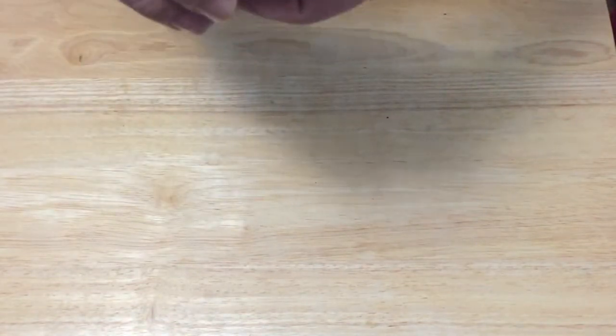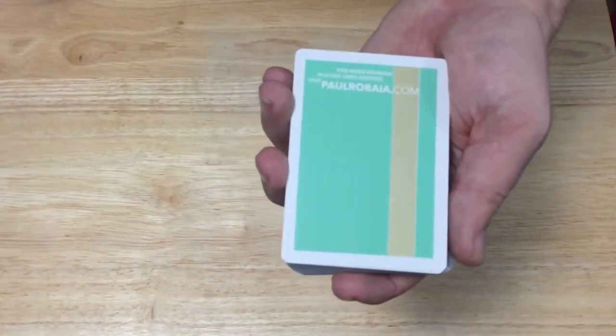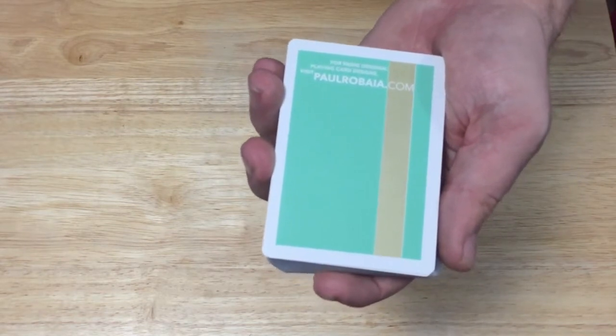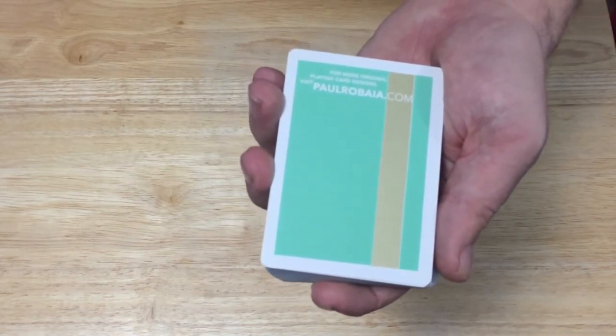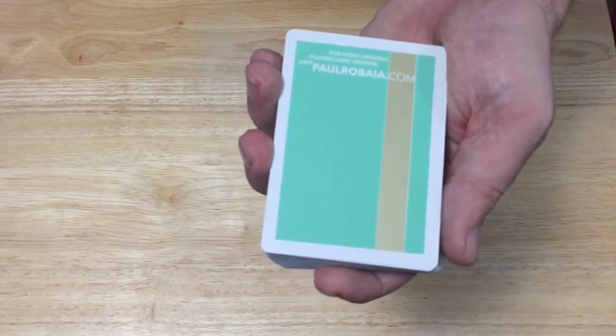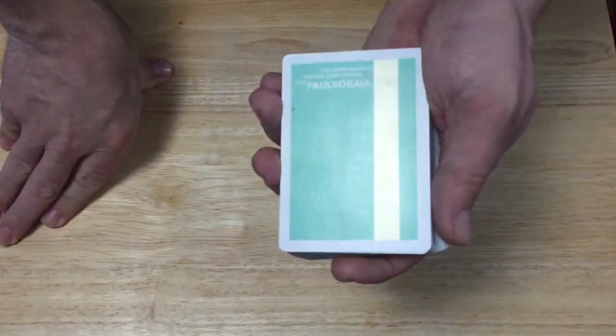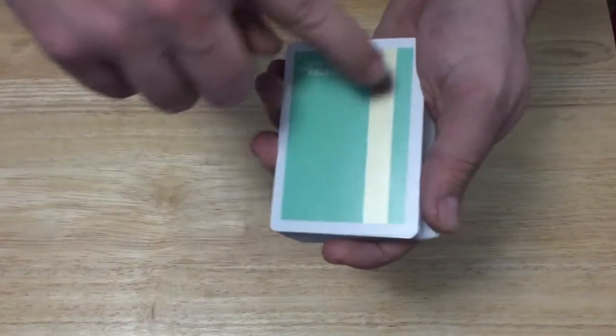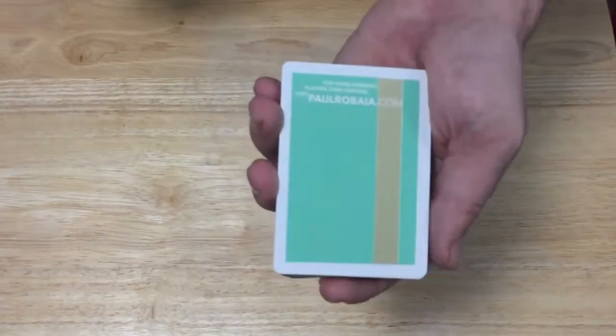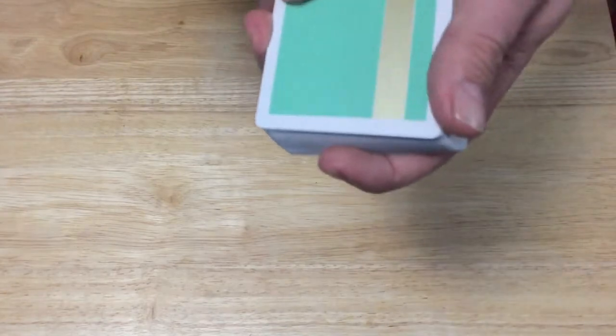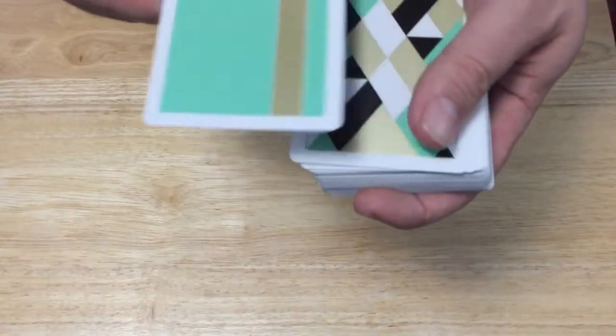They are similar yet different to the previous ones. Here's an ad card that says, 'For more original playing card designs visit PaulRobaya.com,' nothing to do with his paper clubs website. And there's this gold metallic ink strip. In fact, all the cards have metallic ink on the backs and on some of the faces.